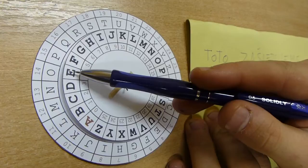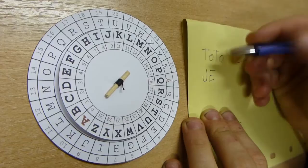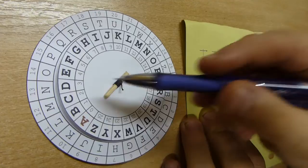A to je v podstatě vše? Dále už je to stále stejné. Vždy vezmeme další znak otevřené zprávy, najdeme ho na otevřeném kotouči a do šifrové zprávy zapíšeme znak ze šifrového kotouče.